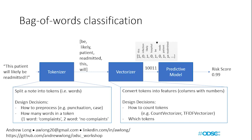In the Bag of Words classification algorithm, there are two components you need to convert your string into numbers: the tokenizer and the vectorizer. The tokenizer takes your string or note and splits it into tokens — for now, think of tokens as individual words. For example, taking our sentence, it returns a list: 'be', 'likely', 'patient', 'readmitted', 'this', 'will'. One limitation of this tokenizer is that we've lost the word order for the sentence. But it still contains a lot of valuable information from the individual words.